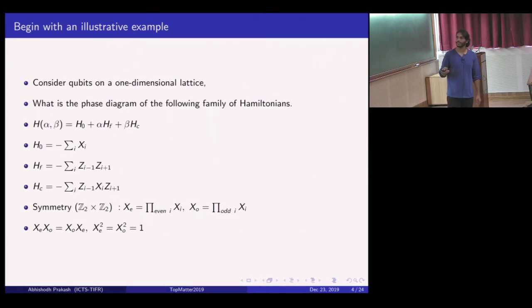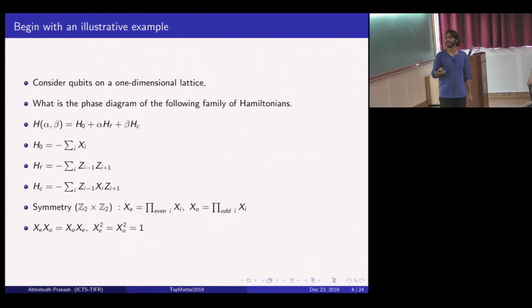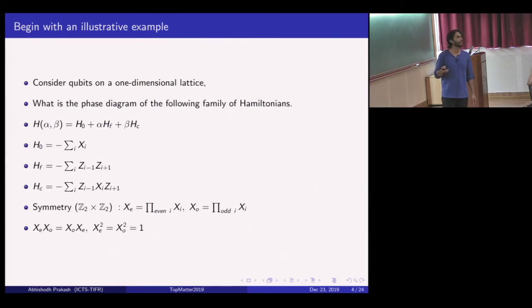Crucial to the story are the global symmetries of the system. The system has two distinct Ising global symmetries, isomorphic to Z2 × Z2. This is obtained by flipping all spins on the even lattice sites and all spins on the odd lattice sites. Each of these symmetry generators squares to one, and they commute with each other, which establishes that the symmetry is Z2 × Z2.